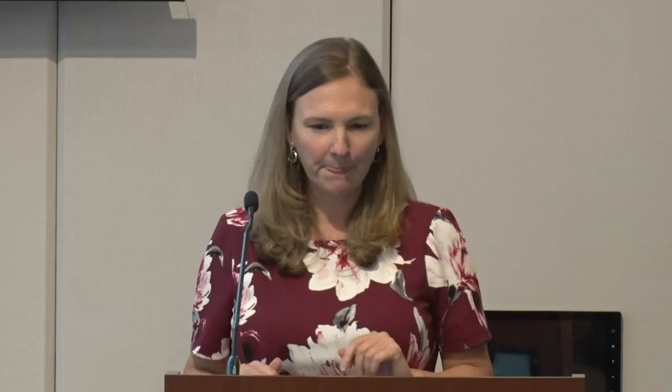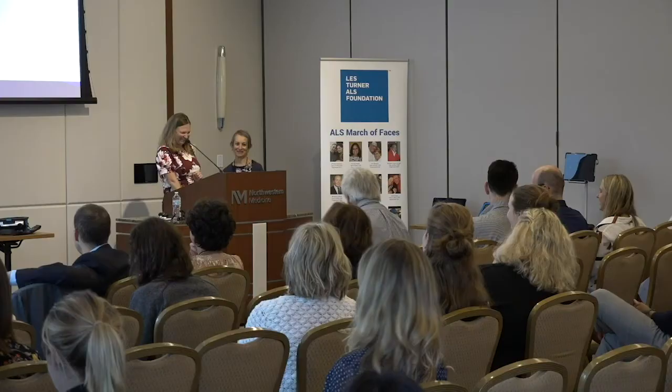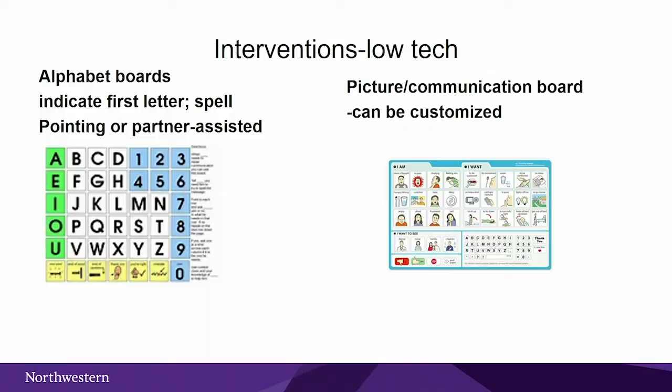There are low-tech interventions. If someone has only bulbar involvement but good hand control, pen and paper or a write-on wipe-off board may work well. One notable example was a patient who had the alphabet board tattooed on his arm—a creative and effective solution. There are different physical communication boards that can be customized with pictures, words, or letters tailored to what that individual needs to communicate with family or caregivers.